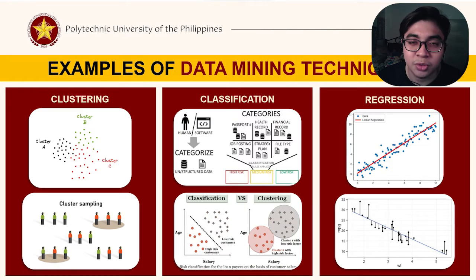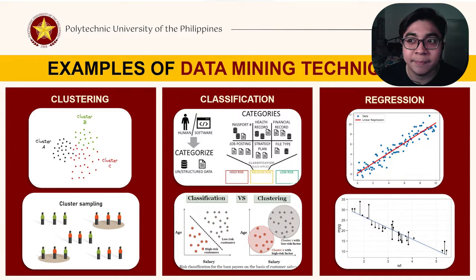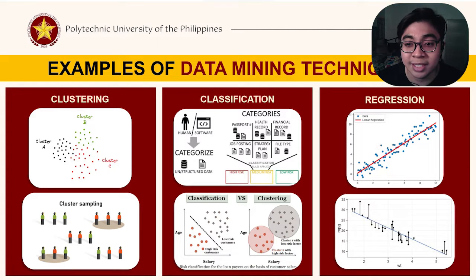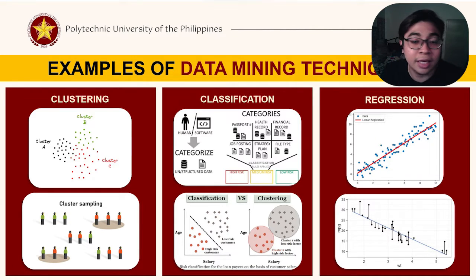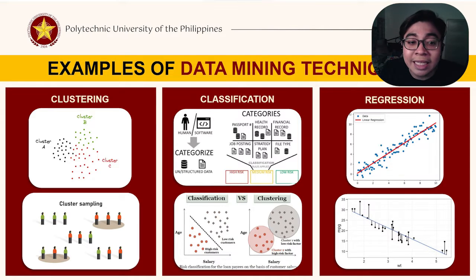Second is classification. Think about different types of fruits — apples, bananas, and oranges. If I show you a new fruit and ask whether it's an apple, a banana, or an orange, you can tell me which one it is. That's classification — you classify a certain object or data and define what type it is. It's like putting things into groups based on what they are. If it's brown and red, it's probably an apple — so it is being classified.